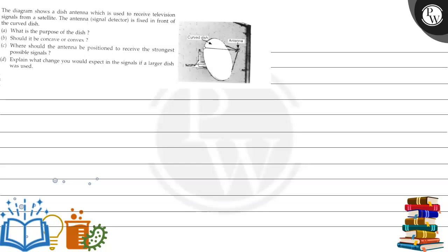Hello, let's read the question. The question says that the diagram shows a disc antenna which is used to receive television signal from a satellite. The antenna is fixed in front of the curved disc.